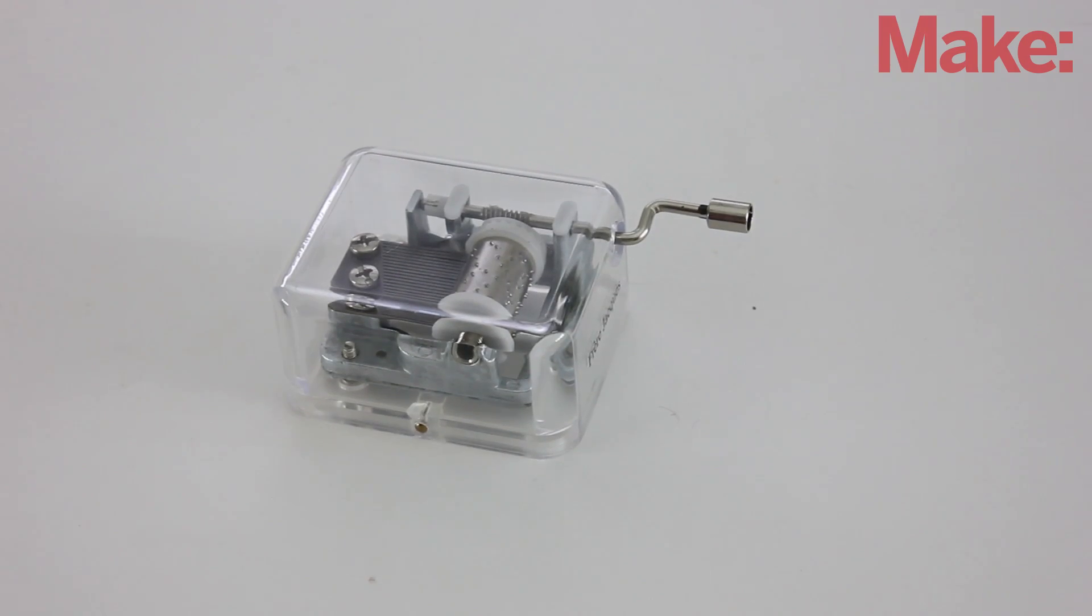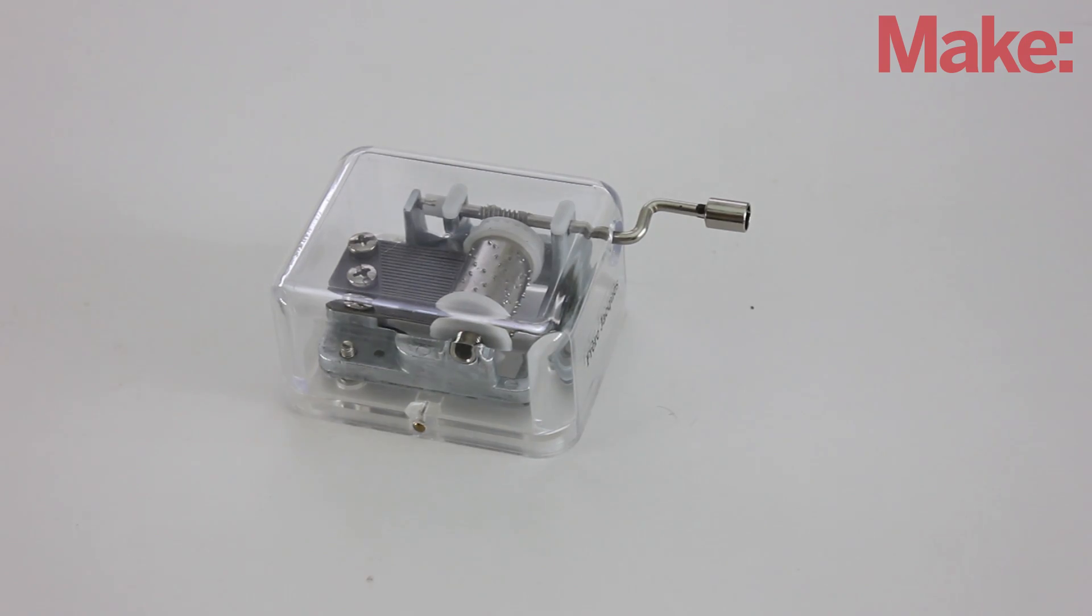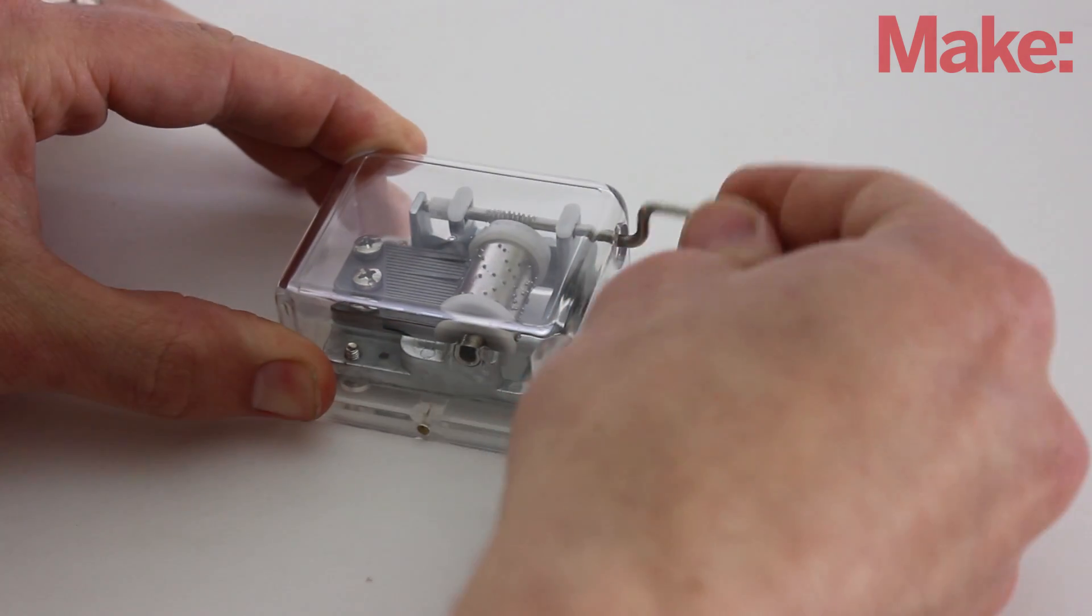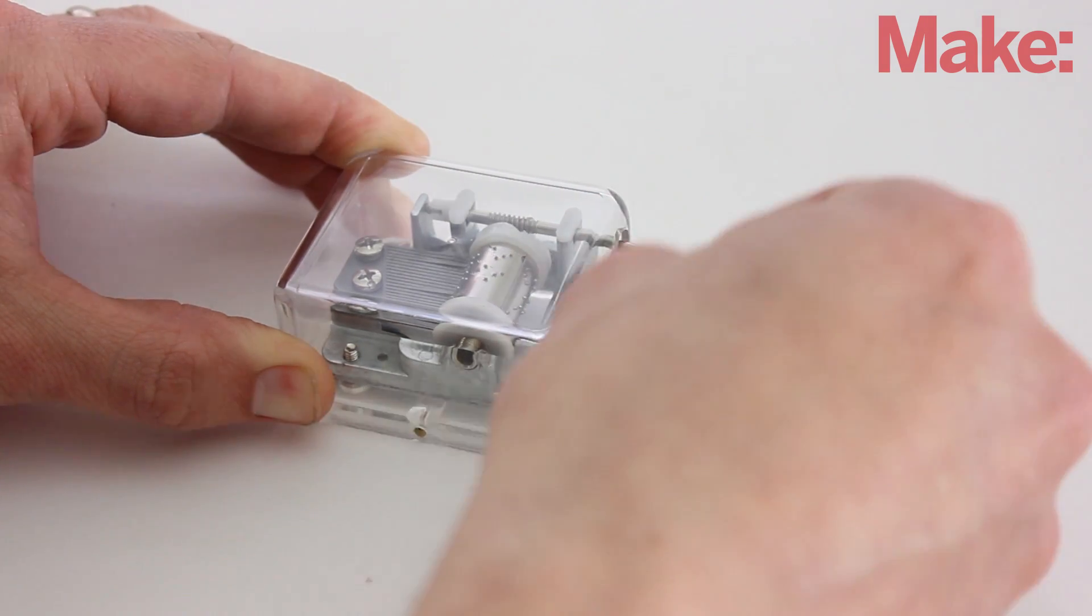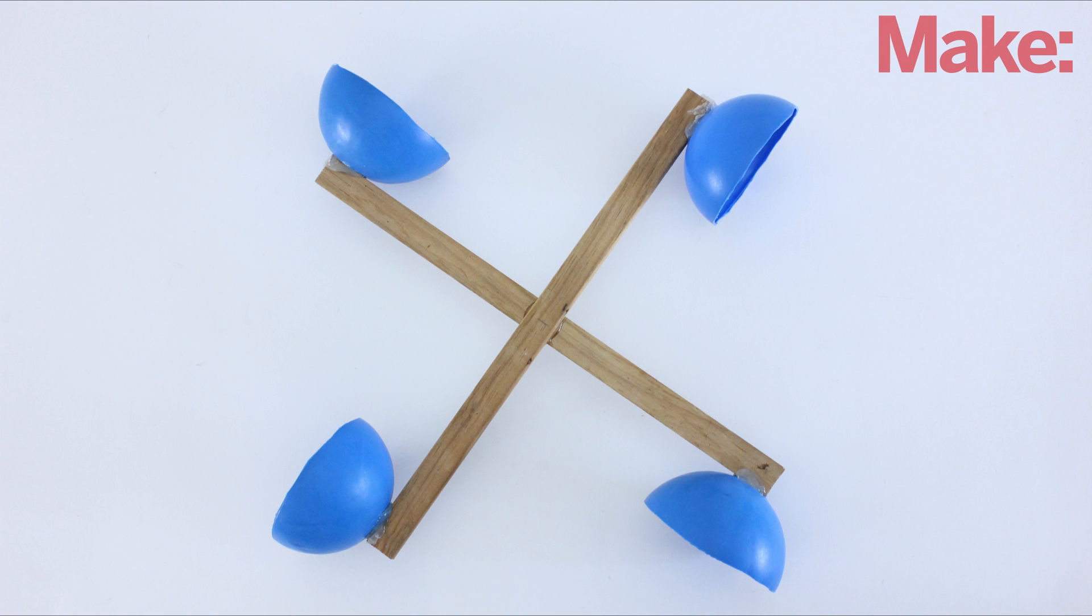The first and most important step in this project is finding a good crank-operated music box. You want to find one with a song that isn't annoying. Now we need to make a simple wind turbine.